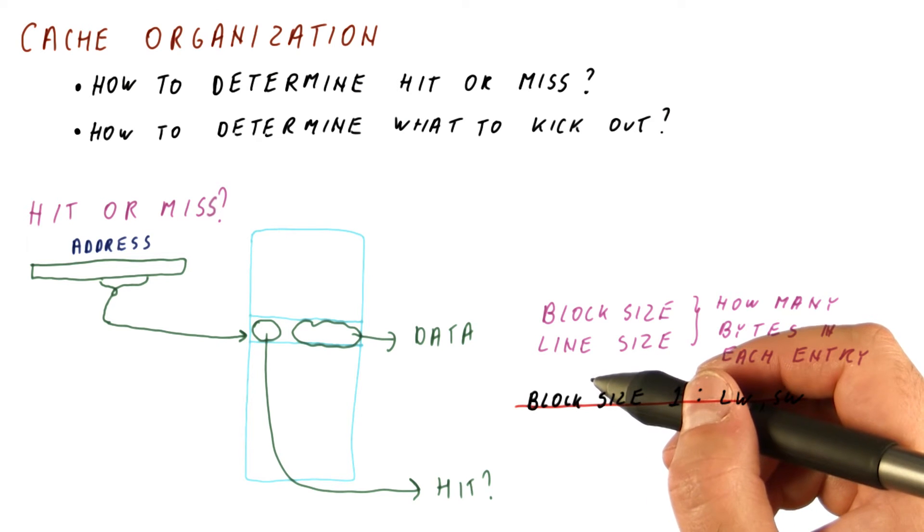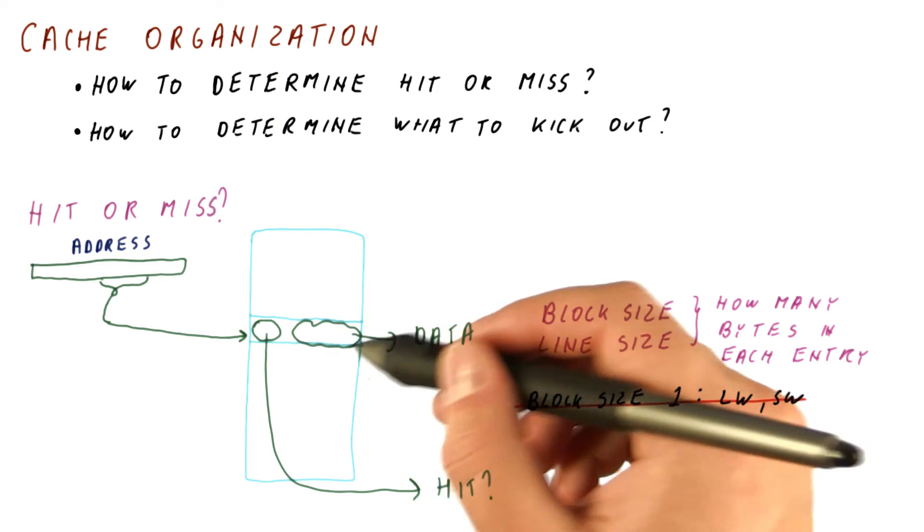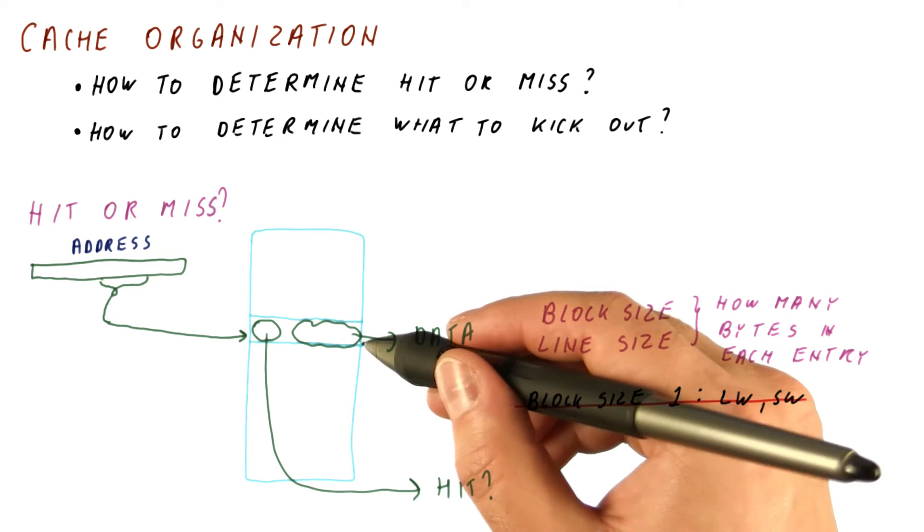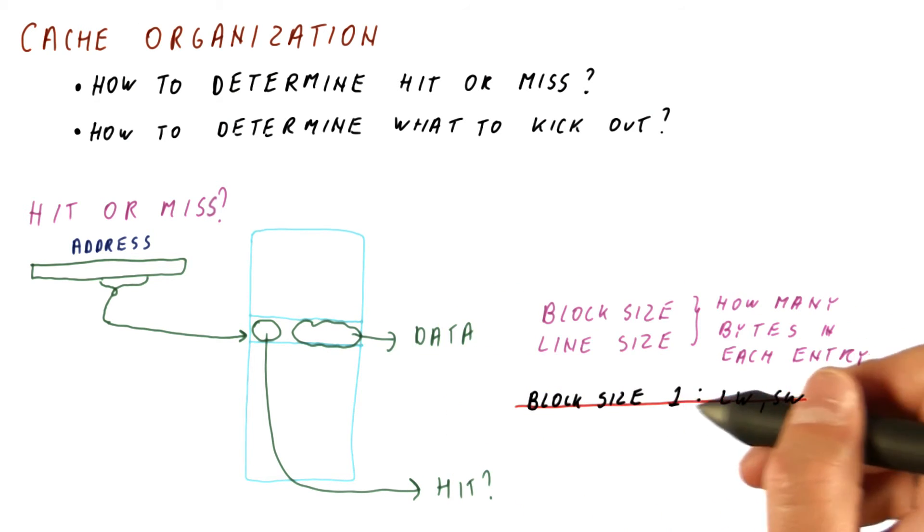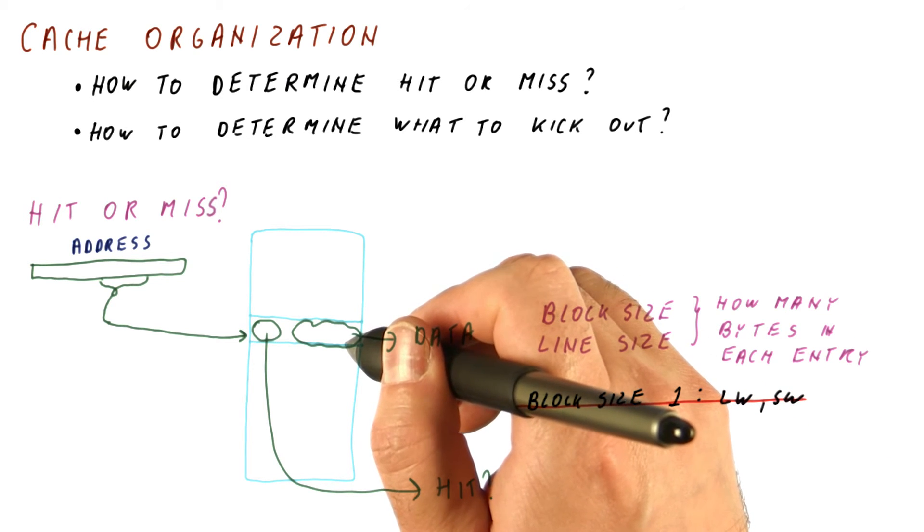We want the block size to be at least as large as the largest single access that we can do in the cache. And hopefully slightly larger than that, just so that when we do a load word or store word, we find the data in the same cache block most of the time.